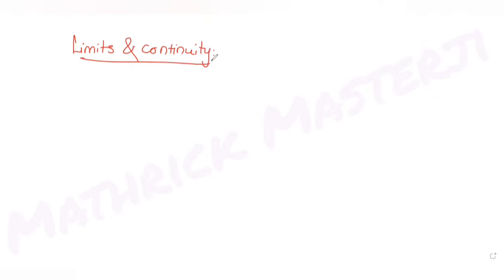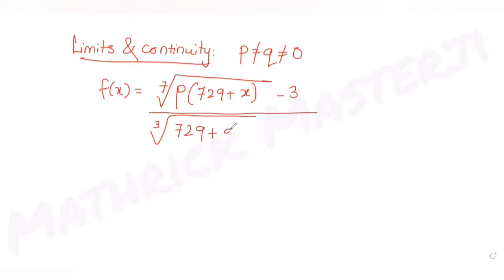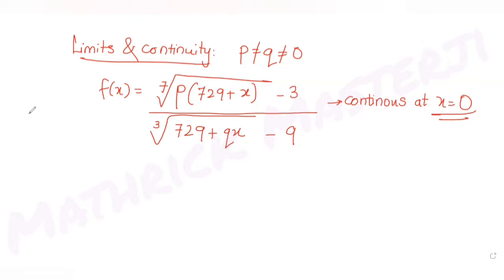The question tells us: if p and q are not equal to each other and also not equal to zero, then the function f(x) equals the seventh root of p times (729 + x) minus 3, divided by the cube root of (729 + qx) minus 9.